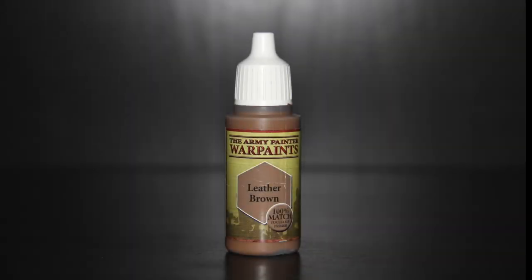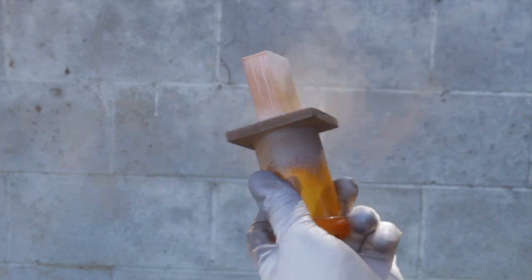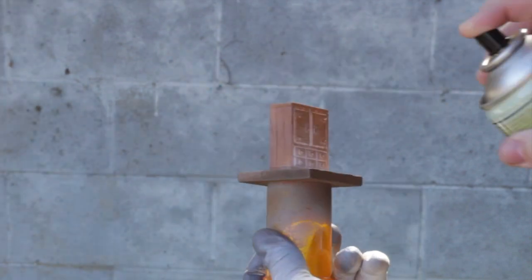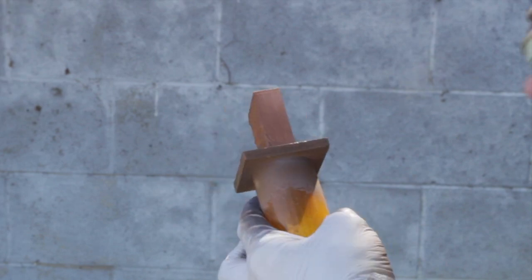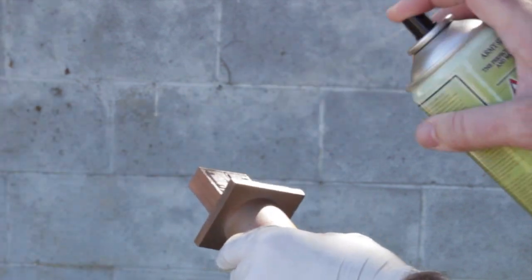Using Army Painter's Leather Brown Spray Primer, we are able to get a workable base coat down in a matter of seconds. If you're planning on painting a large amount of scenery or minis that have a very similar base color, then this method is a huge time saver. And after drying for just under a minute, our piece is ready for the next step.